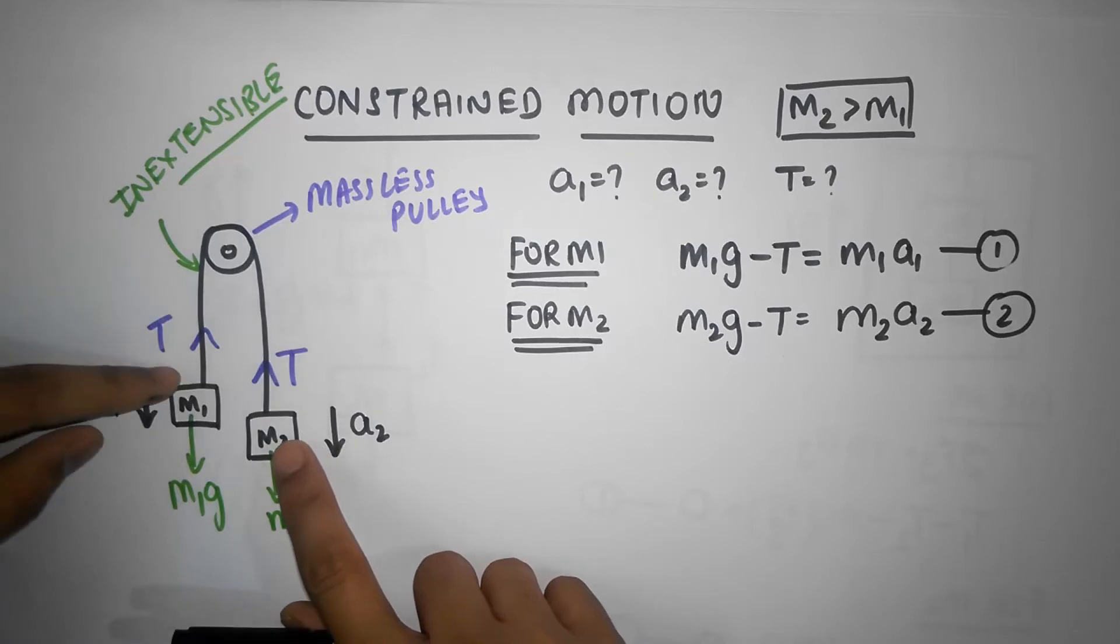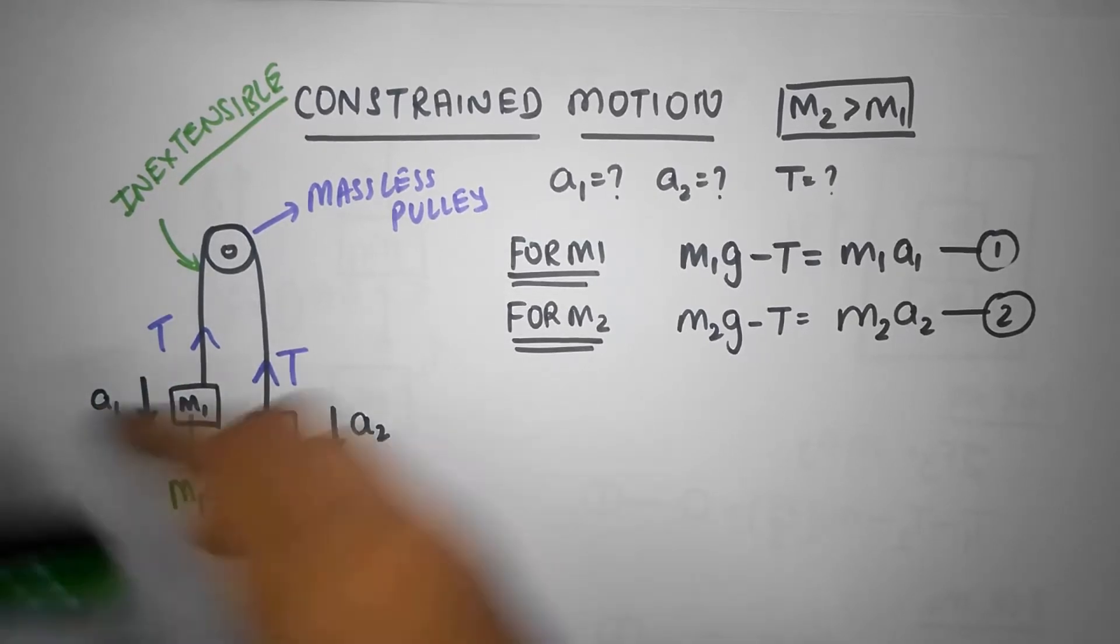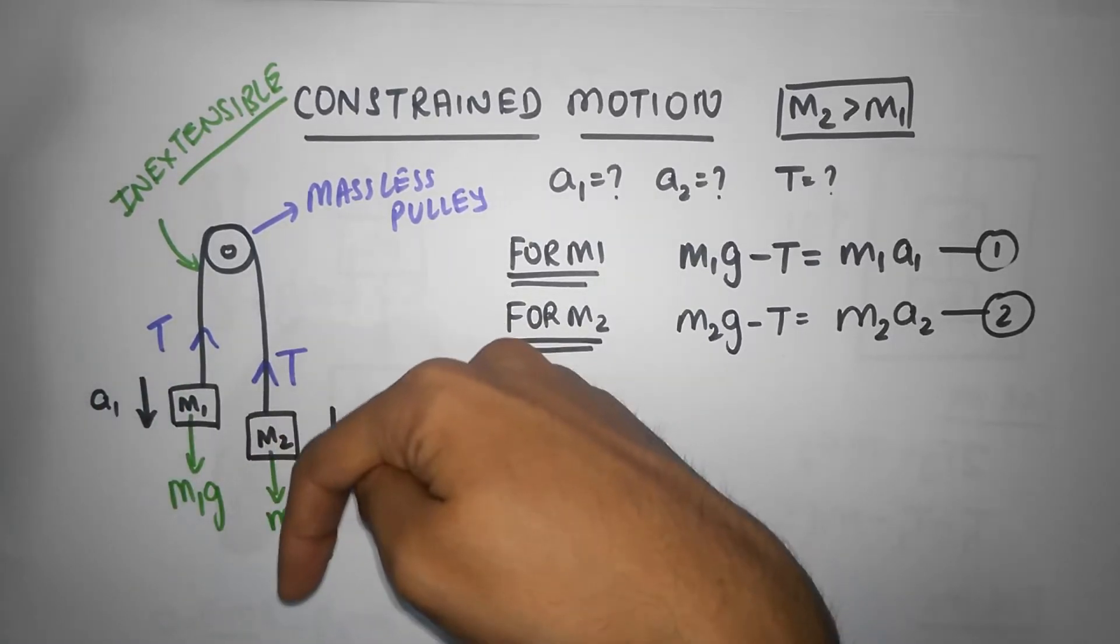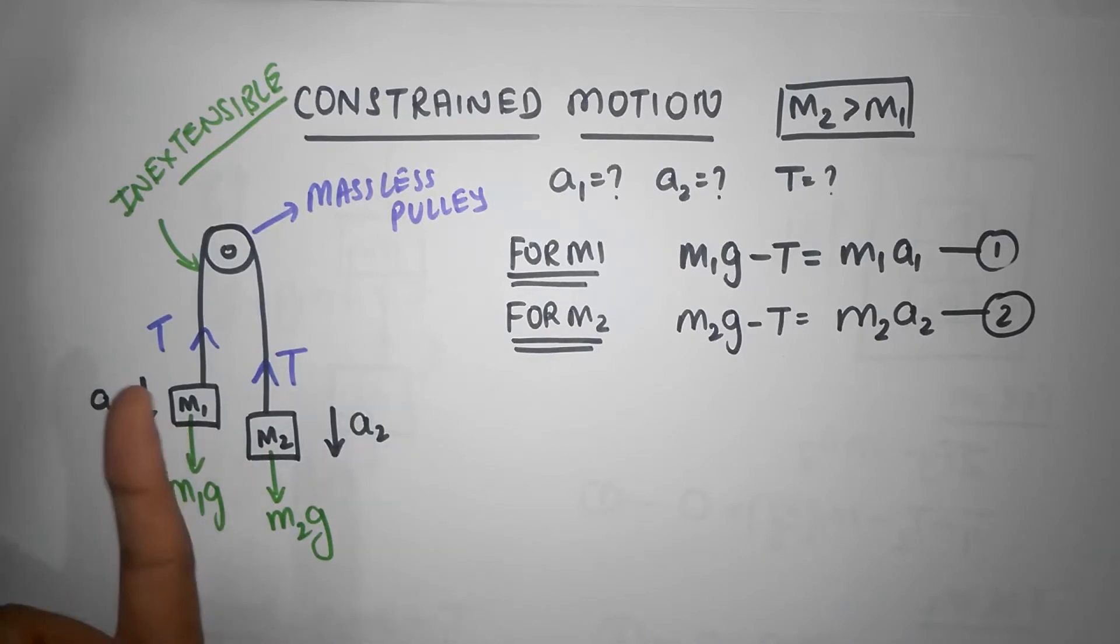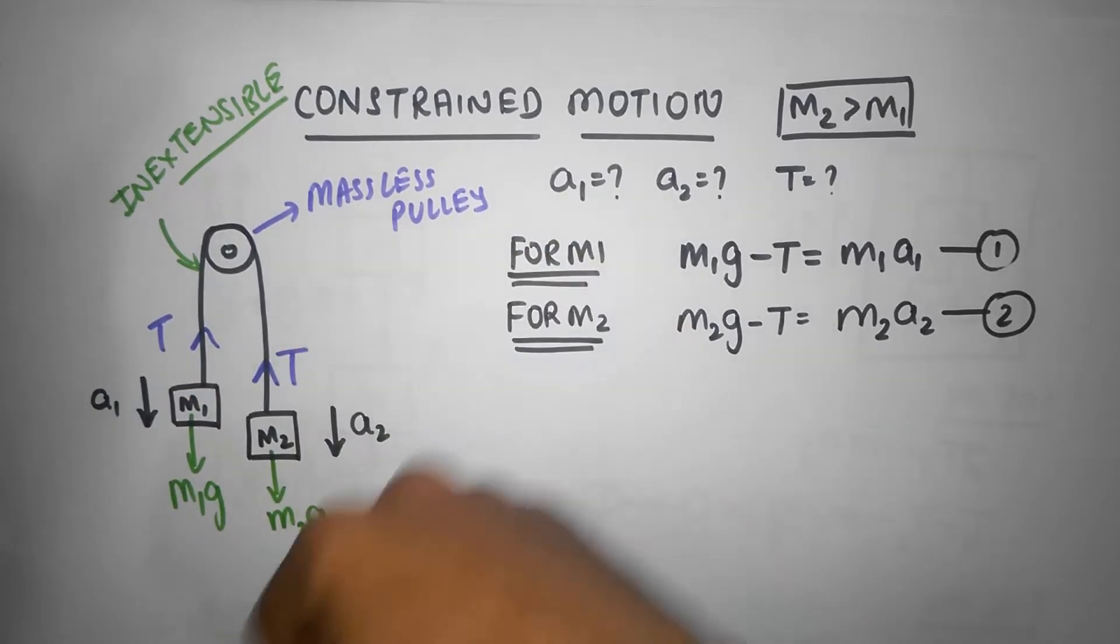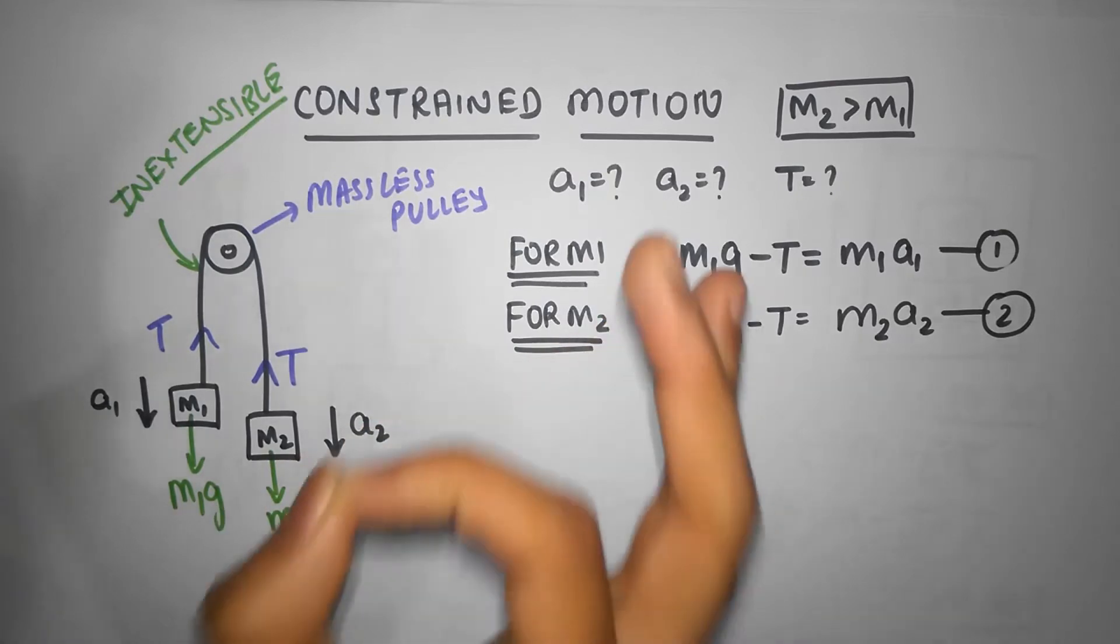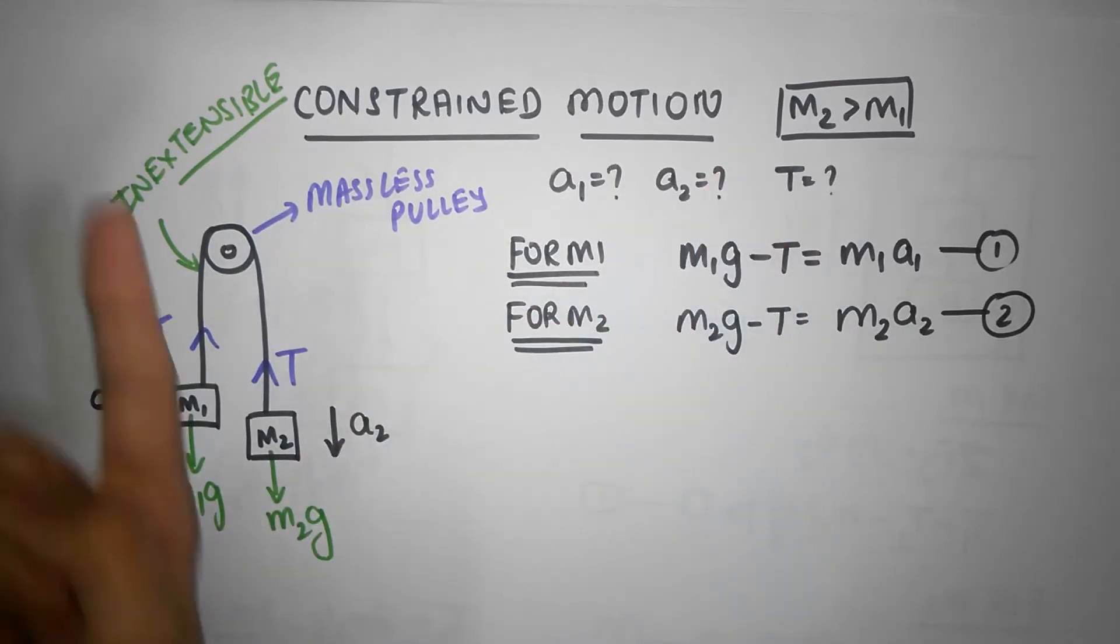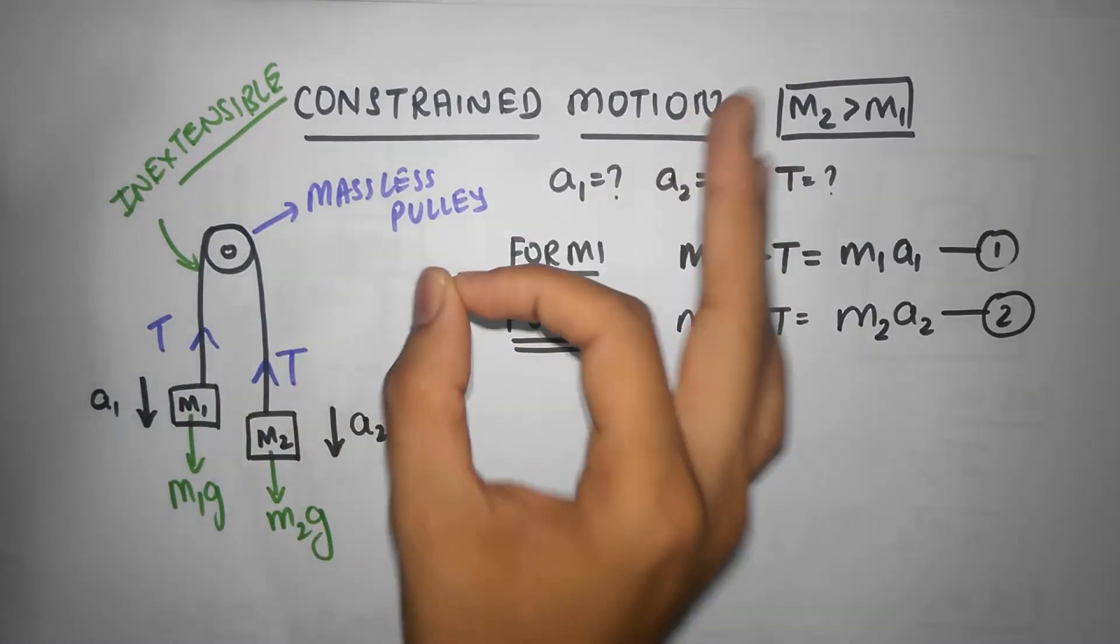Which means if this guy has a velocity downwards of say 5 meters per second at any moment in time, this fellow must get the same velocity, 5 meters per second but in the opposite direction. So it has to get opposite velocity. If this guy has an acceleration downwards, this fellow must get the same acceleration upwards. That's the constraint equation.